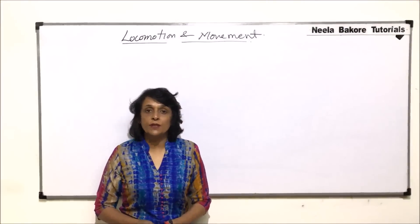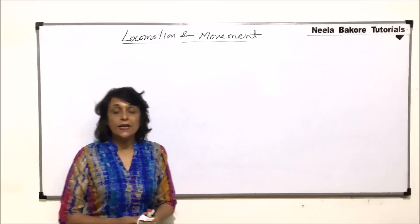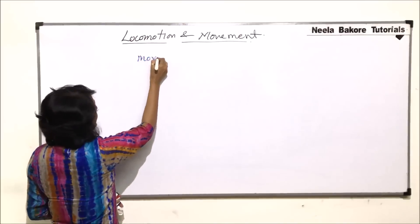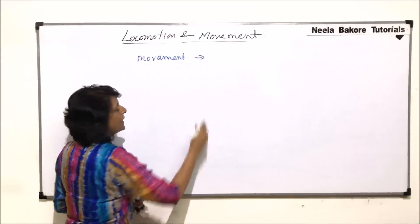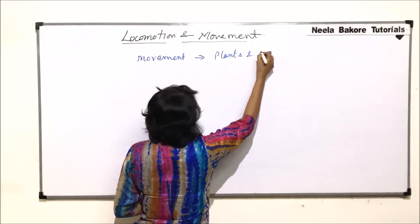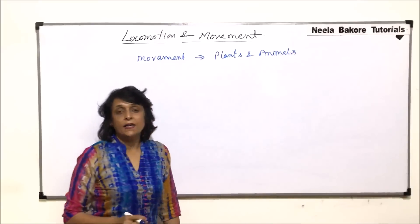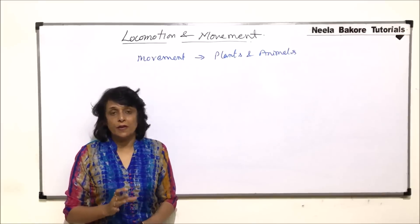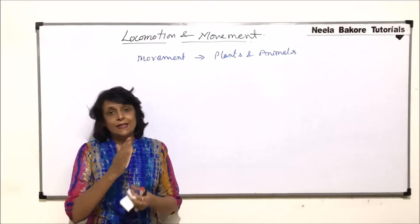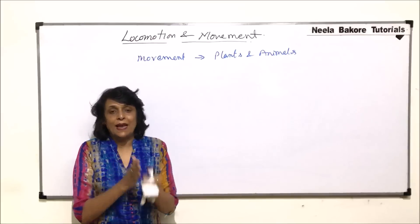We are starting with the new chapter in the unit of human physiology — locomotion and movement. First, let us understand the difference between these two words. Movement is shown by both plants as well as animals, referring to any body part moving. In the case of plants, when leaves move, they are still attached to the same branch or twig — the plant is not moving from its location.